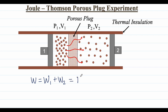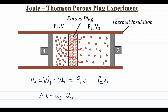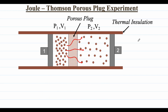The total work done is equal to P1 V1 minus P2 V2, and the net change in internal energy is given by ΔU = U2 minus U1. The Joule-Thompson experiment is carried out adiabatically, so heat transfer Q equals zero.